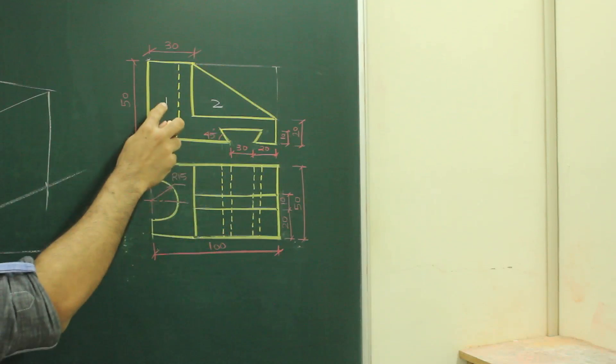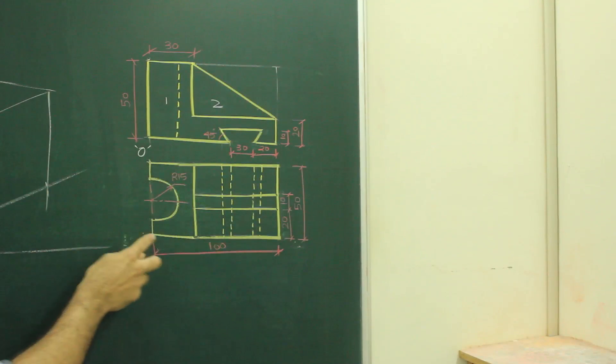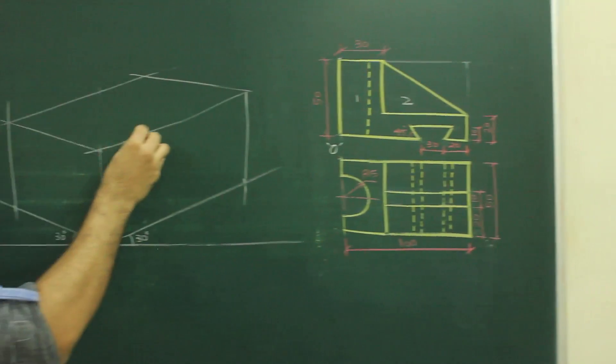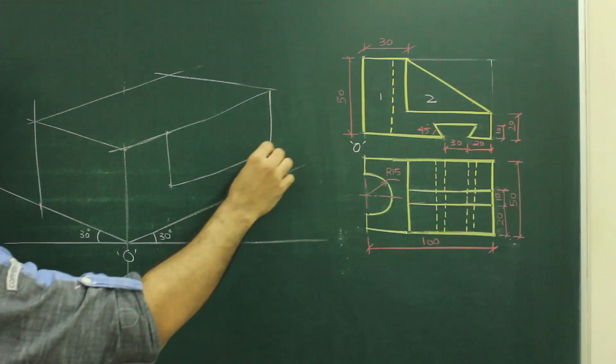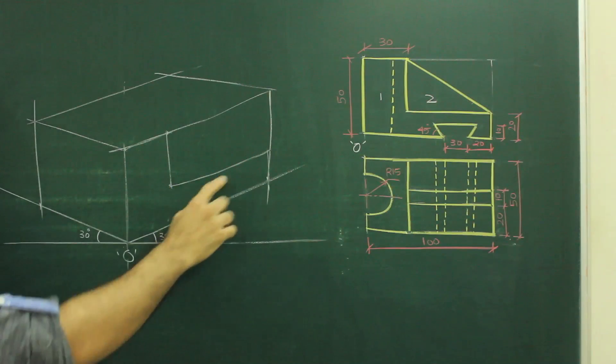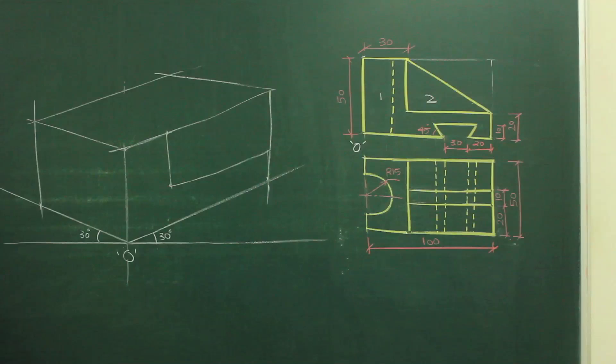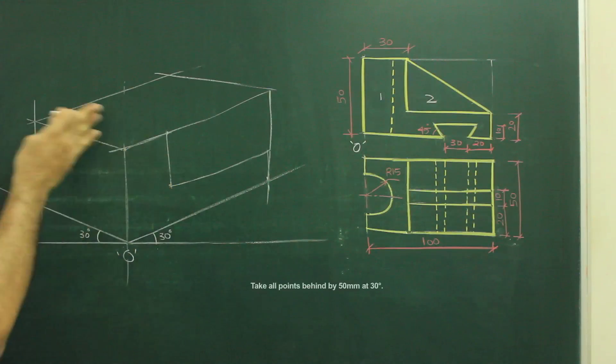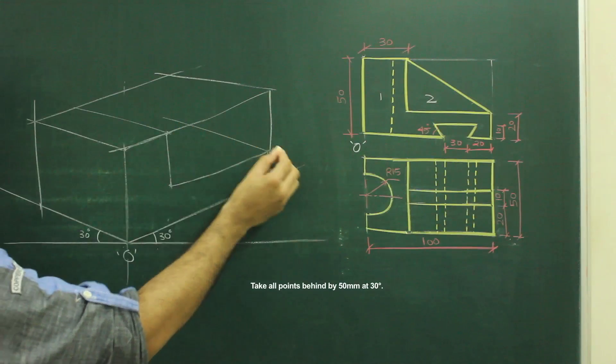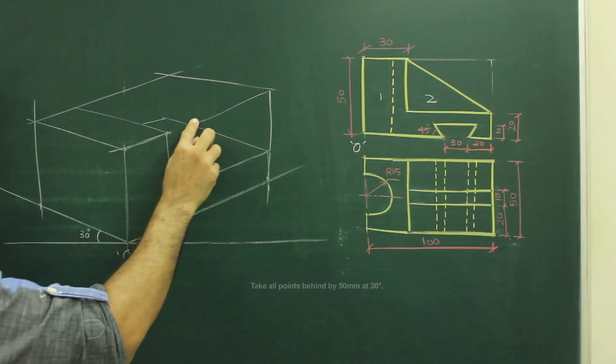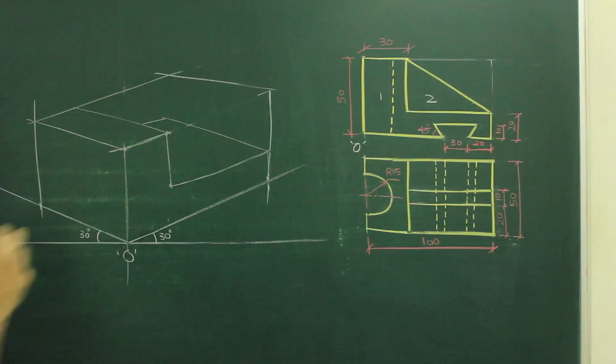So what we need to do, first we need to draw part one, which is full. So I will take 30 from here, go down by 30 and extend and you can take this 20. So we'll get this part. Now in isometric, whatever is there in the front, the same thing is behind. So we'll go behind by 15, 15 and we'll join this. So we'll get this part one.